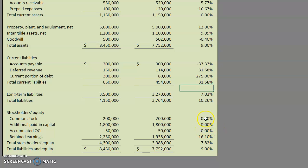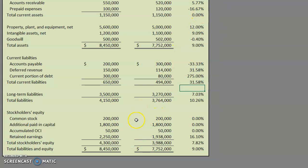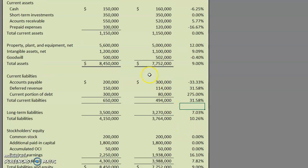We see some zeros, so we'll want to check those to make sure they're correct. The reason for our zeros is because we had no change during the period. We also see that accounts payable decreased by 33.33% — pretty significant. But then our long-term liabilities went up by 7%, so perhaps we took out some money to pay off a few of our liabilities.